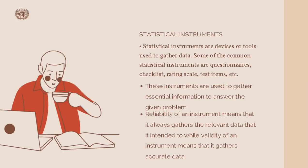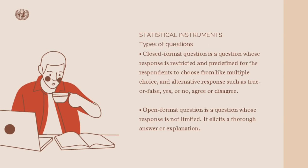For statistical instruments — statistical instruments are devices or tools used to gather data. Some common statistical instruments are questionnaires, checklists, rating scales, test items, and many more. These instruments are used to gather essential information to answer a given problem. Reliability of an instrument means that it always gathers the relevant data it intended to, while validity of an instrument means that it gathers accurate data.